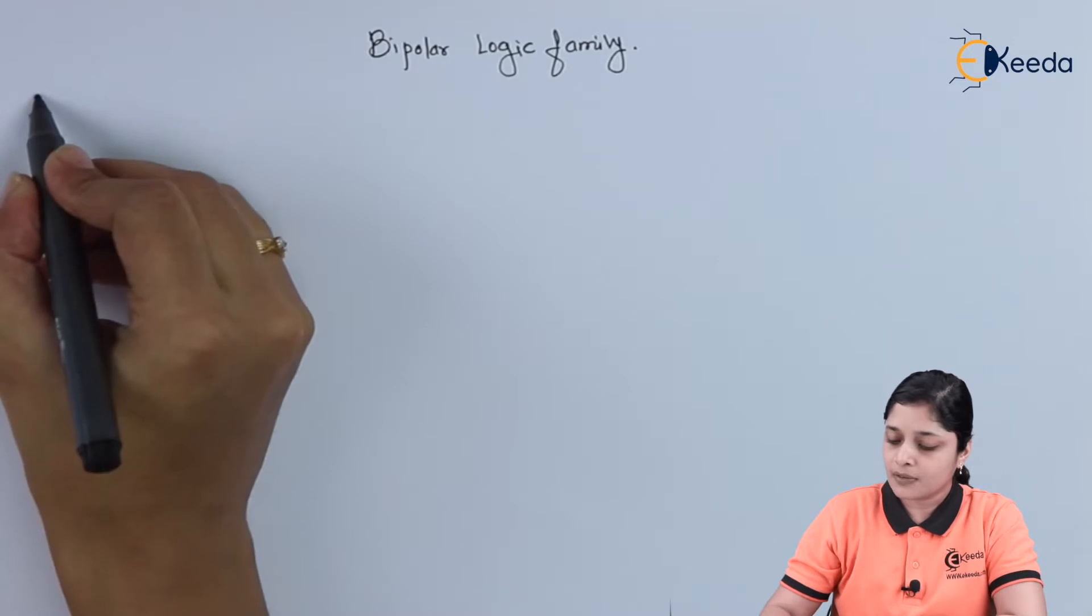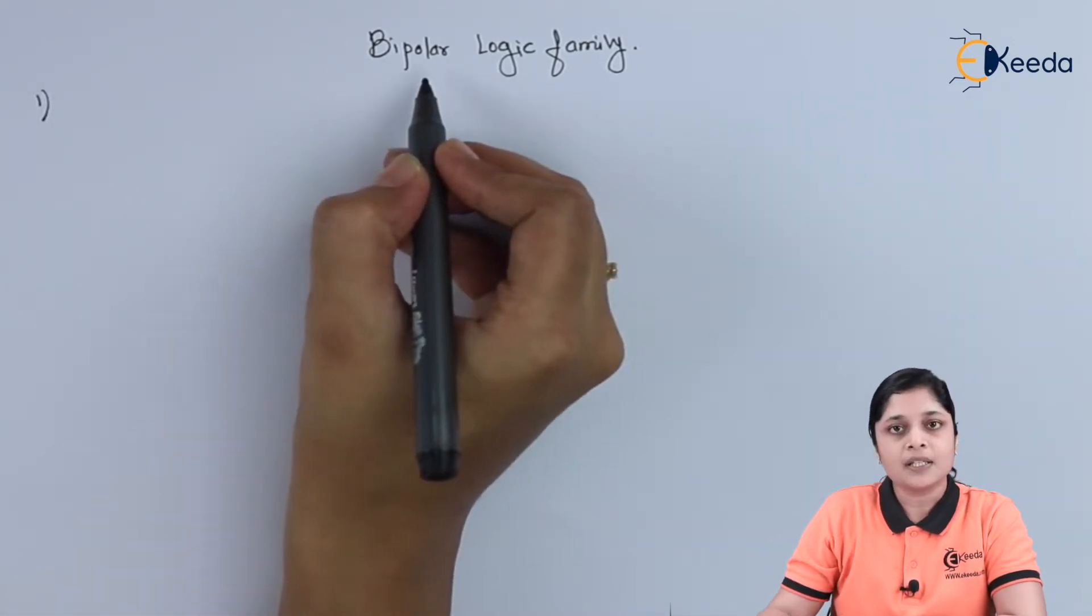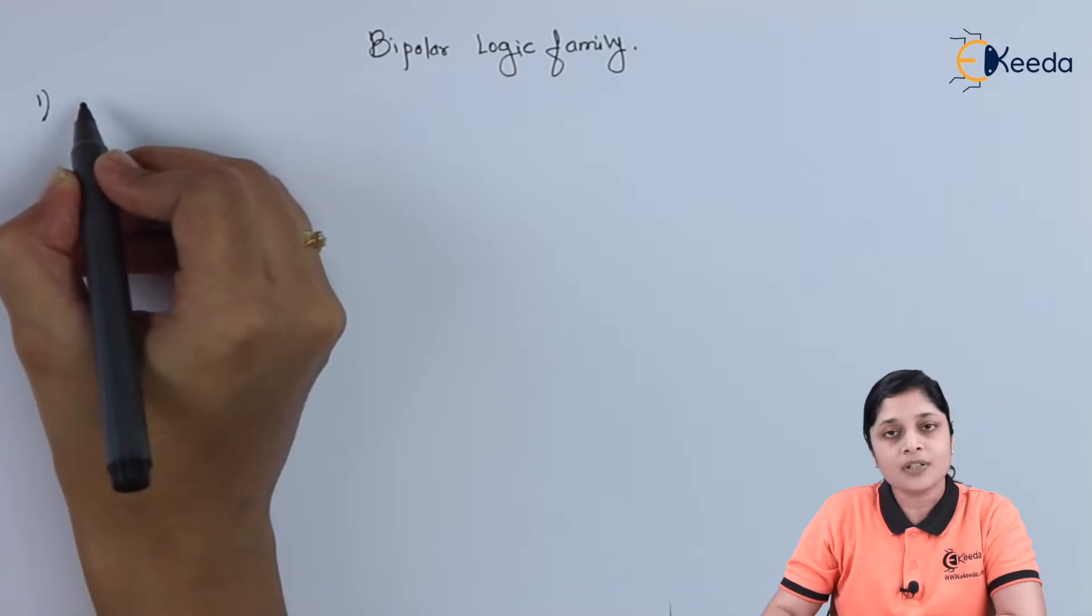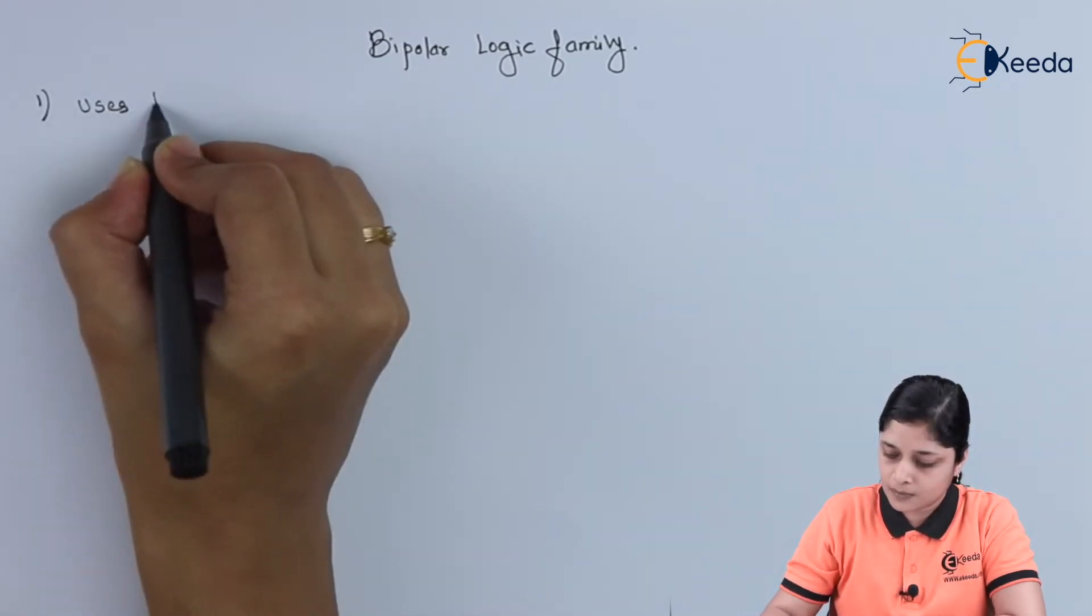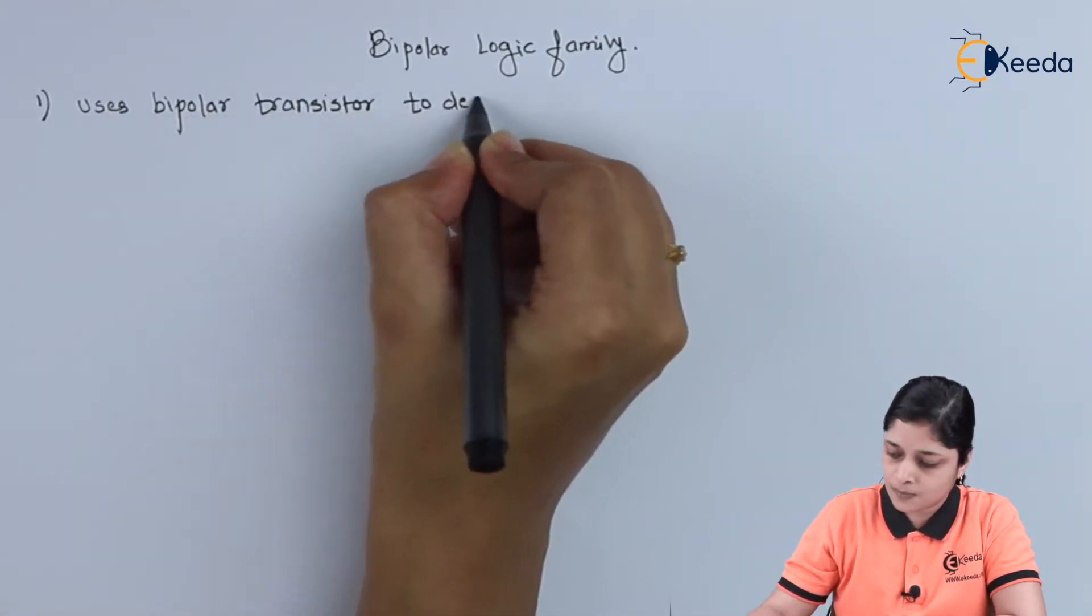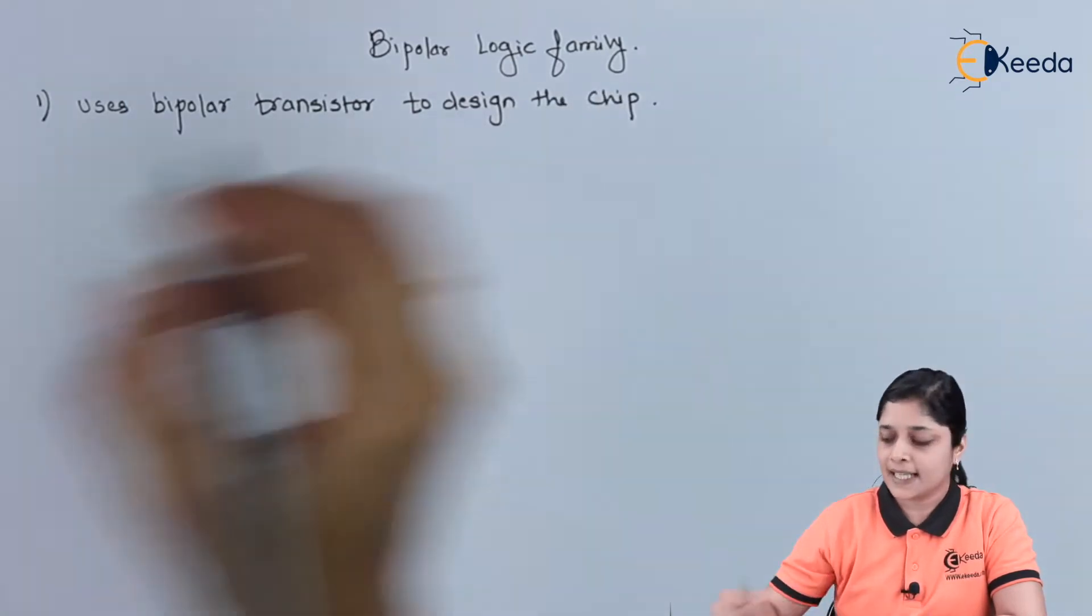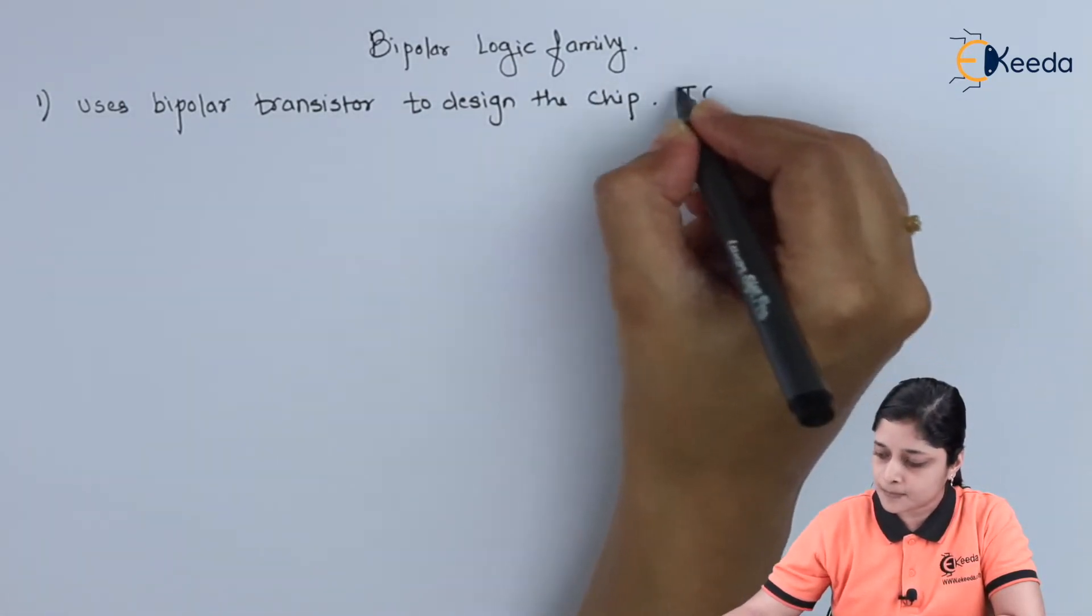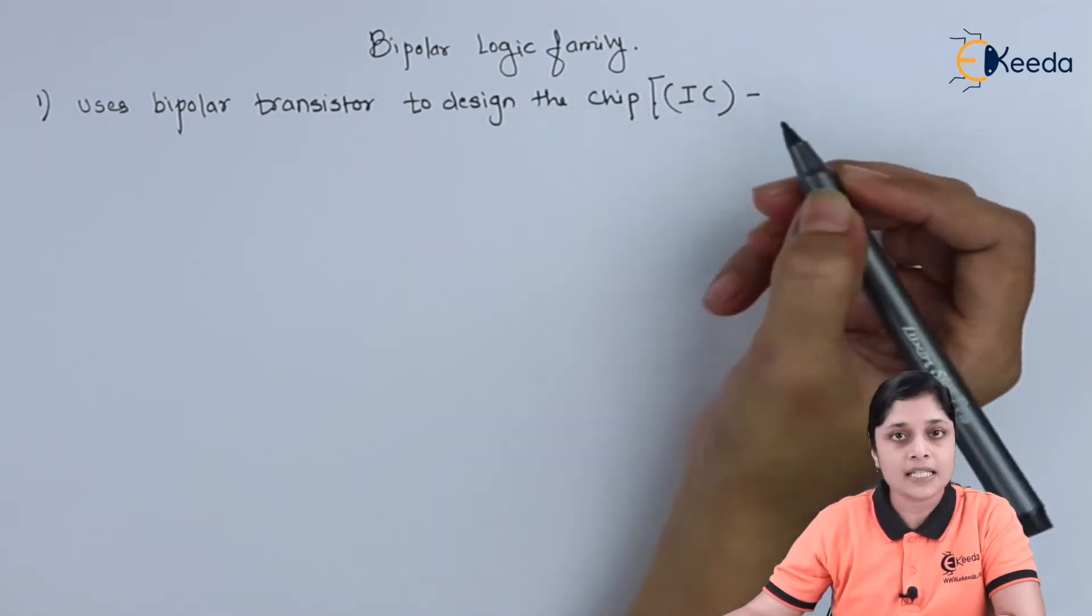The first point you can write is this family uses Bipolar Transistor to design the chip, or you can say IC—the long form of IC is integrated circuit.